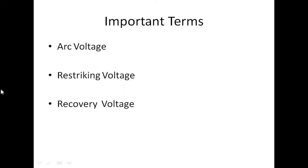As we know, the circuit breaker has two important types of contacts: fixed contact and moving contact. Under normal operating conditions, the contacts remain together. When a fault occurs, the moving contact gets separated and an arc will form between both contacts. The whole working principle of the circuit breaker essentially revolves around extinguishing this arc.